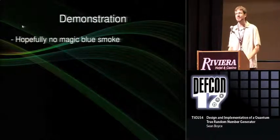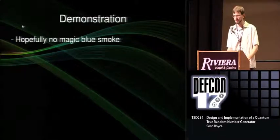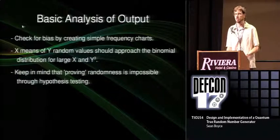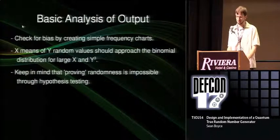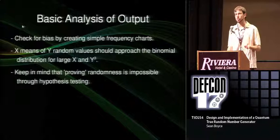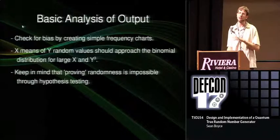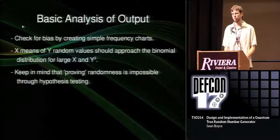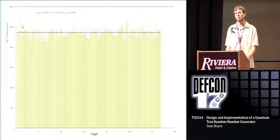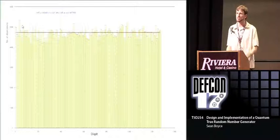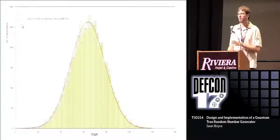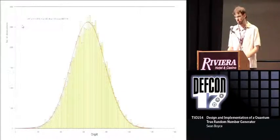The live demonstration won't be happening because the microcontroller died on its journey here, but if you'd like to play with the detector later, that will be possible. Once you have output, you need to analyze it — otherwise you might find out it's meaningless. You start by creating basic frequency charts to make sure you have no missing numbers. You can also try to recreate the binomial distribution by plotting the frequency of averages of sets of numbers. You have to keep in mind that proving randomness is impossible using traditional hypothesis testing statistics — what you're really doing is looking for problems you expect to have and fixing them. For the first 60,000 random numbers generated, we didn't see anything unexpected, and taking 10,000 means of six digits, we get approximately the binomial distribution.